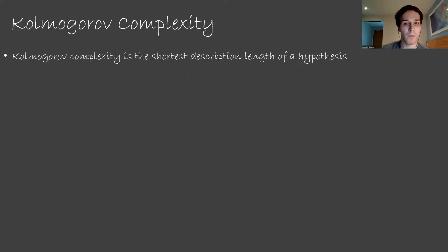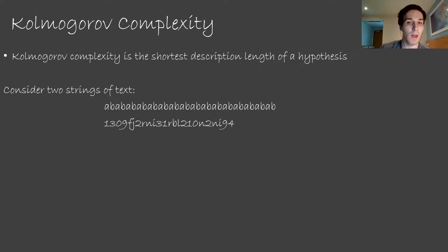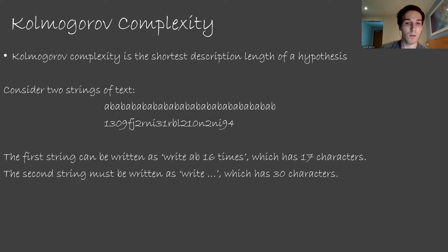Kolmogorov complexity is the shortest description length of a program. As an example, consider two different strings of text: one is the letters AB repeated 16 times, and the other is 24 characters I produced by mashing my keyboard. We can think of programs that would output these two strings. In English, the first string can be written as write AB 16 times, which has 17 characters. The second string must be written as write and then all the symbols, which has 30 characters. So that has a longer description length, and thus higher Kolmogorov complexity.